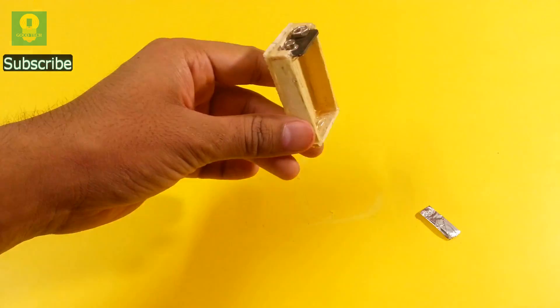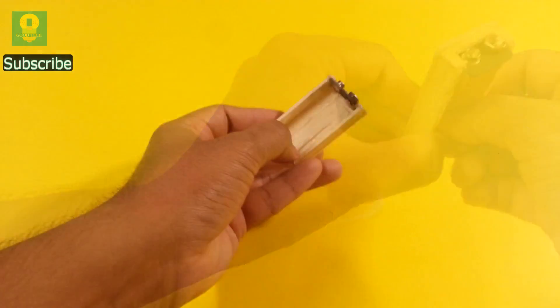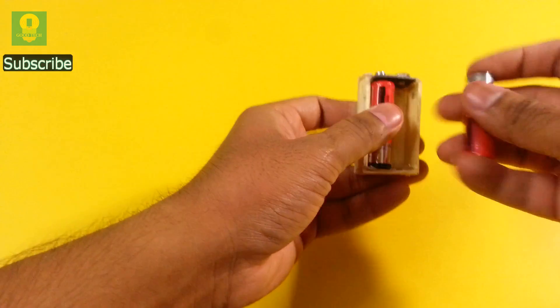Paste it on the other side of the cell holder. Insert the cells and our holder is ready to use.